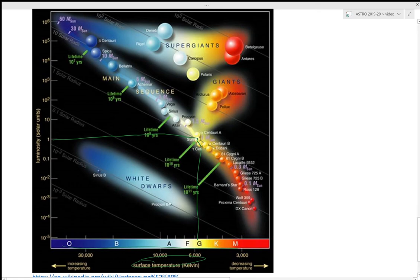Remember the iso-radius lines. The main sequence covers stars that are red dwarfs, which are maybe a tenth the size of the Sun, all the way up to stars that are maybe 10 times or a little more the size of our Sun.